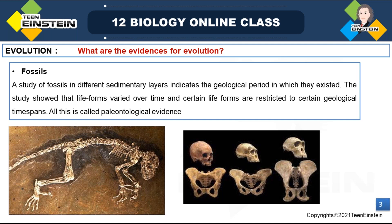Rocks form from sediments — you know that rocks form sediments. The cross-section of the earth's crust shows the arrangement of such sediments layer-wise. That cross-section helps in the study of the history of the earth and such evolution. You can find fossils in rocks. You can see here fossils of dinosaurs and earlier organisms.